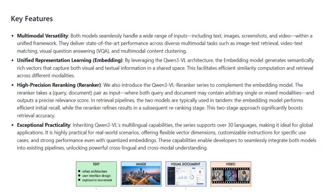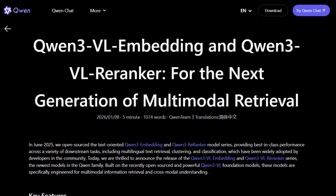Think of the embedding model as a recall tool and the reranker as a precision tool. The Qwen team points out that the embedding model alone is fast but only gives you about 85% precision, while running the reranker on the whole corpus is too slow. Combining them — using the embedding model to get relevant candidates and the reranker to select your top one or three — gives you a much better overall result.